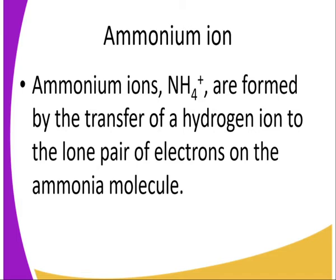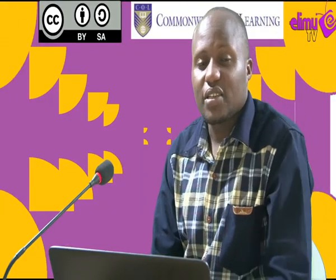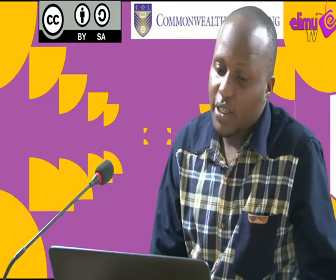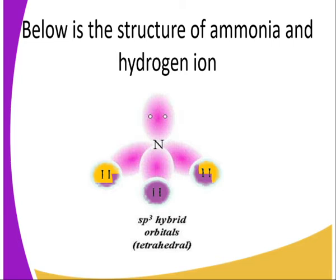Ammonium ion also forms a dative bond, where hydrogen ion accepts the lone pair of electrons — the lone pair of electrons are donated by ammonia — and that forms a dative bond. Below is the structure of ammonia gas, and we will look at the hydrogen ion. Ammonia, as you can see, is formed by nitrogen forming three covalent bonds with a hydrogen atom each.